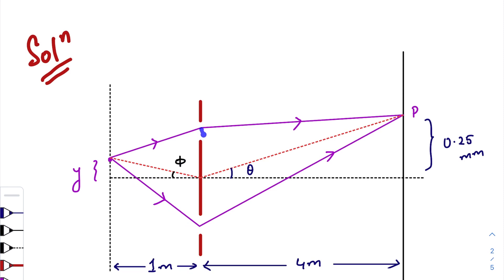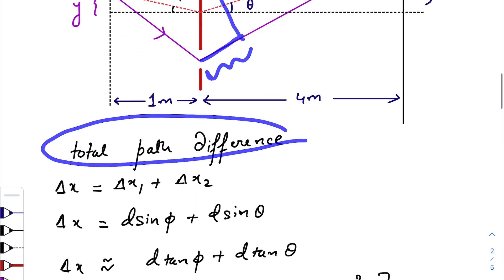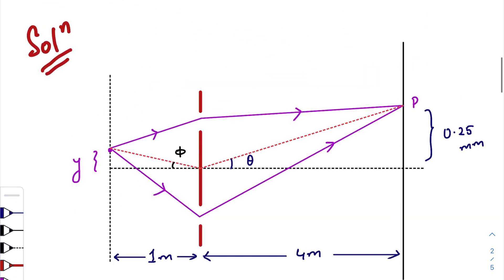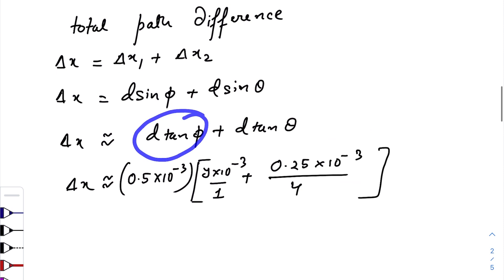Similarly, the extra path traveled in front of the slit is this length. It should be d sine theta. So the total path difference that is d sine phi plus d sine theta, which is also nearly equal to d tan phi plus d tan theta because theta and phi are very small. Put the value of d here.